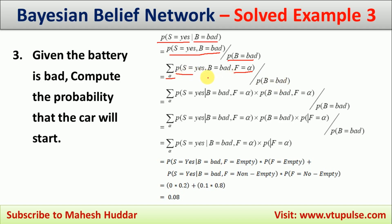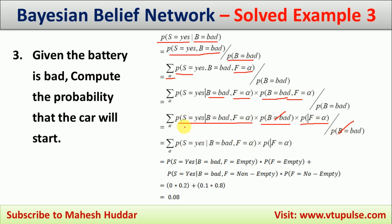Expanding this summation by substituting the possible values of alpha: first with F=empty, then with F=non-empty. This gives: P(S=yes | B=bad, F=empty) × P(F=empty) + P(S=yes | B=bad, F=non-empty) × P(F=non-empty). For the first term, the table gives P(S=no | B=bad, F=empty) = 1.0, so P(S=yes) = 1 minus 1.0 = 0. For the second term, P(S=no | B=bad, F=non-empty) = 0.9, so P(S=yes) = 1 minus 0.9 = 0.1.